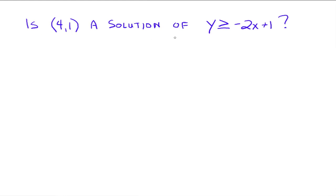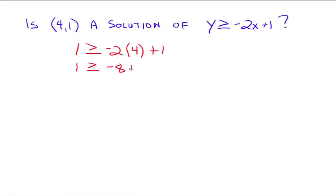We've got 4 for X and 1 for Y. So: 1 is greater than or equal to negative 2 times 4, plus 1. That gives us 1 is greater than or equal to negative 8 plus 1, which is 1 is greater than or equal to negative 7. That is definitely true — 1 is greater than negative 7. So yes, (4, 1) is a solution to this particular inequality.